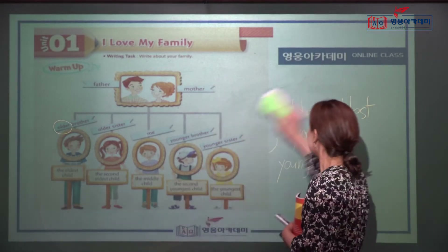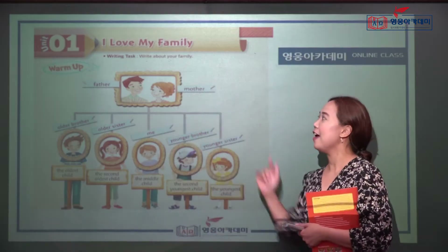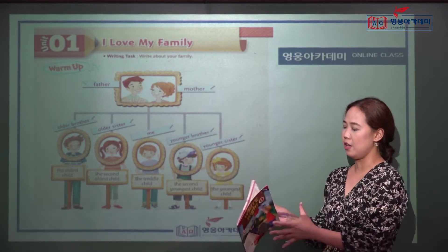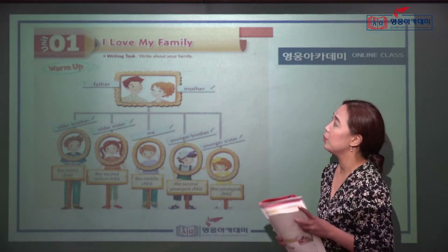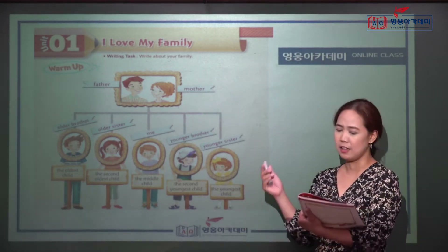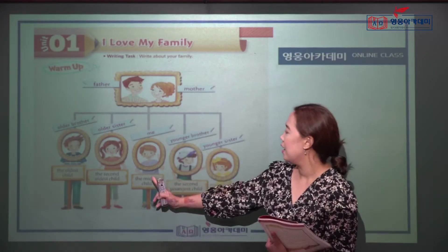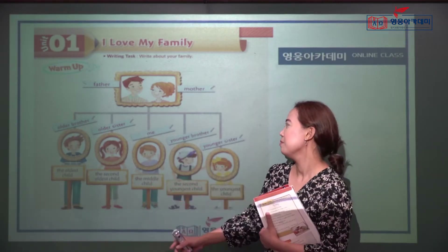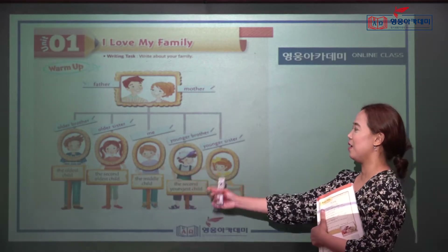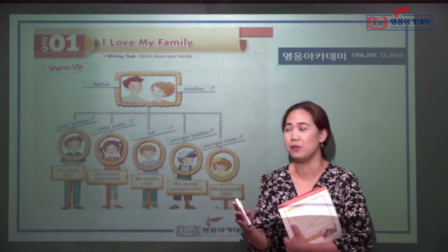Let's look at this picture and talk about it. This is the writer's family — he said, 'I love my family.' He has a big family. How many people are there? One, two, three, four, five, six, seven — wow, seven people! Usually in Korea, how many members are in a family? Three, four, five, right?